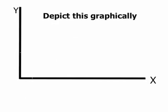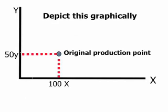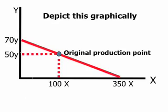Now we have the basic information needed to depict this graphically. The original production point is 50Y and 100X. Now add in the information about the maximum amount of Y and X that can be purchased, 70Y and 350X, and include a line that connects all of these three points. This line we call the national income line because it represents all of the possible combinations of goods that can be purchased at that value of national income.